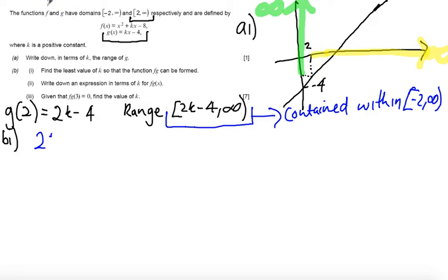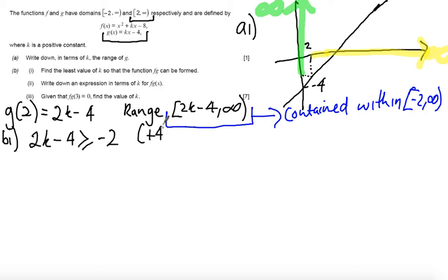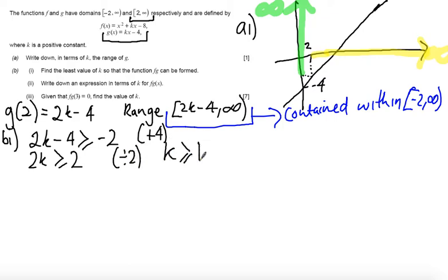So 2k minus 4 must be greater than or equal to minus 2. If I add 4 to both sides I get 2k must be greater than or equal to 2. And if I divide both sides by 2, k must be greater than or equal to 1. So I now have a least value.